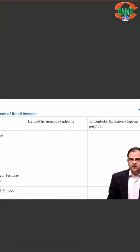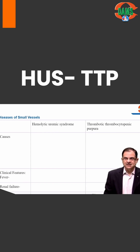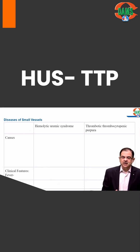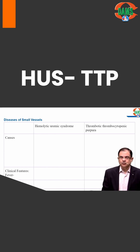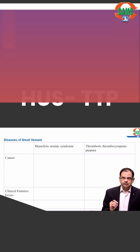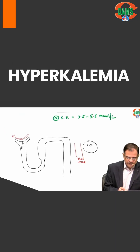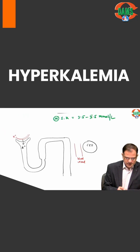The diseases of small vessels leading to acute kidney injury include two conditions: one is hemolytic uremic syndrome and the second is thrombotic thrombocytopenic purpura.